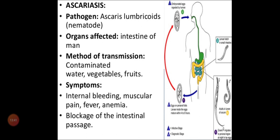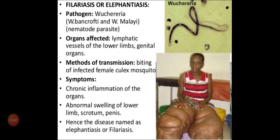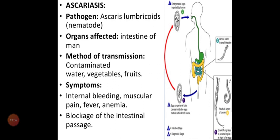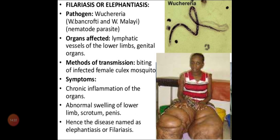To quickly recap: Ascaris lumbricoides is a roundworm in the nematode group. Male and female are separate. It will be seen in the intestinal part of human beings. It will spread through contaminated water, vegetables, and fruits, entering the soil through affected human fecal matter. We need to properly dispose of human fecal matter so it does not mix with the soil. Symptoms include internal bleeding, muscular pain, fever, anemia, and blockage of intestinal passages leading to appendicitis and digestion problems. Taking Nemocid is very effective to overcome this disease.